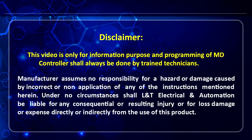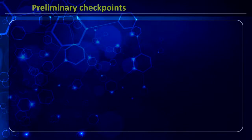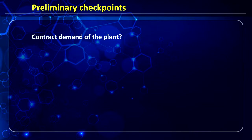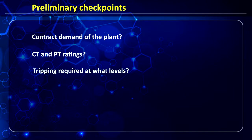Before we begin, some preliminary checkpoints to know before programming are: first, the contract demand of the plant; second, the CT and PT ratings given to the meter; third, at what levels we require tripping; and fourth, what is the demand period. In India we have either a 15-minute or a 30-minute demand period.